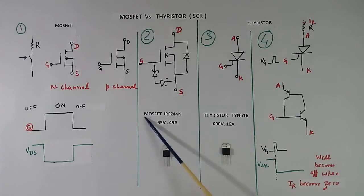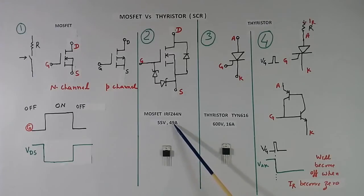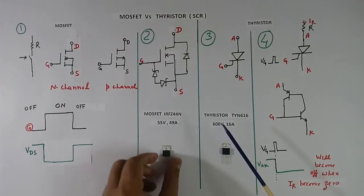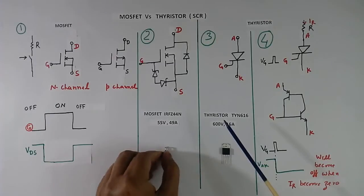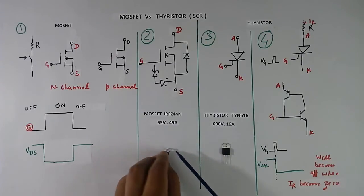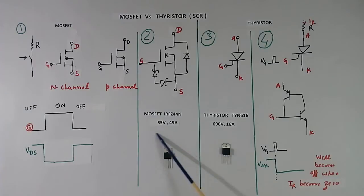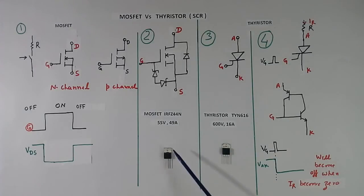Rating of this MOSFET is 55V, 49A. To use full rating, you see the backside — this is metal. You have to connect one aluminium heat sink to make it cool.